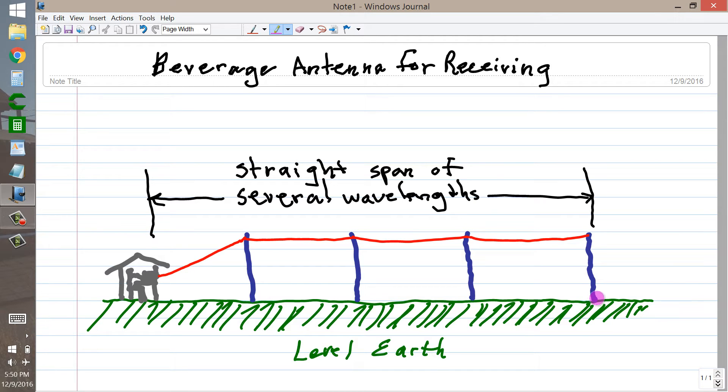Perfect nights for receiving on a beverage antenna on bands such as 80 or even 160 meters, but they'll work on 20, 40, 60 meters, 30 meters, any of those bands. An antenna like this is bi-directional because it's non-terminated.